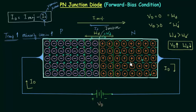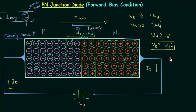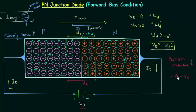The electrons on the N side will see a reduced depletion layer and will also be attracted towards the applied positive potential on the P side. Two things are happening: the width of the depletion layer is reducing, and hence the barrier potential is also reducing. Initially, the barrier potential was VB. The new barrier potential equals VB minus VD, where VD is the applied forward bias voltage. For silicon, VB is equal to 0.7 volts.